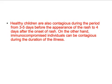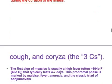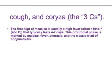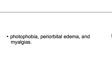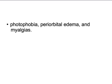Immunocompromised individuals can be contagious for the entire duration of illness. The three C's of measles are cough, coryza, and conjunctivitis. The first sign is high fever greater than 104°F, typically lasting four to seven days. The prodromal phase is marked by malaise, fever, anorexia, and the classic triad of conjunctivitis, cough, and coryza. Other symptoms include photophobia, periorbital edema, and myalgia. A notable complication is punctate keratitis, which has been a cause of blindness in developing countries.